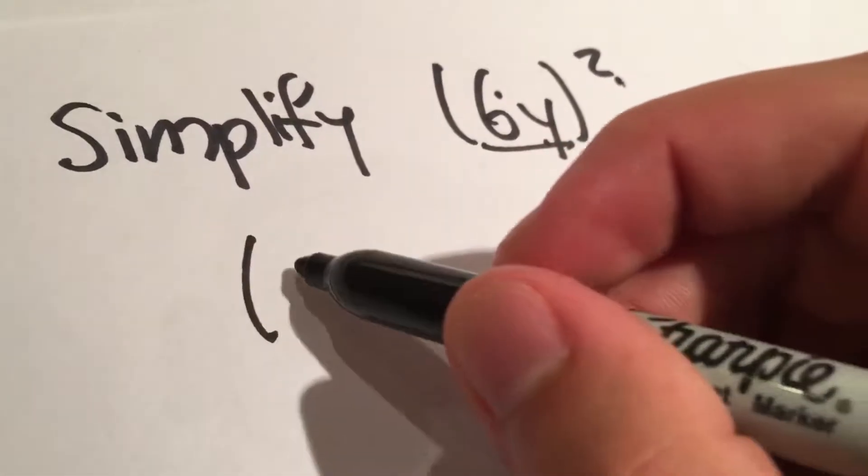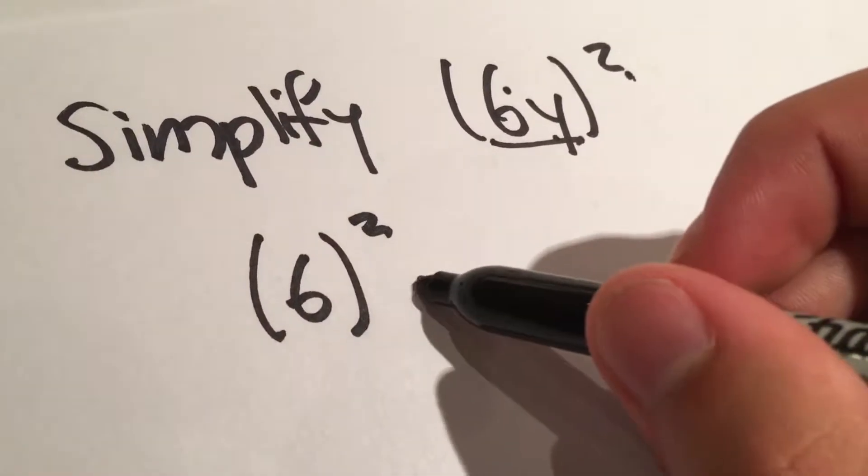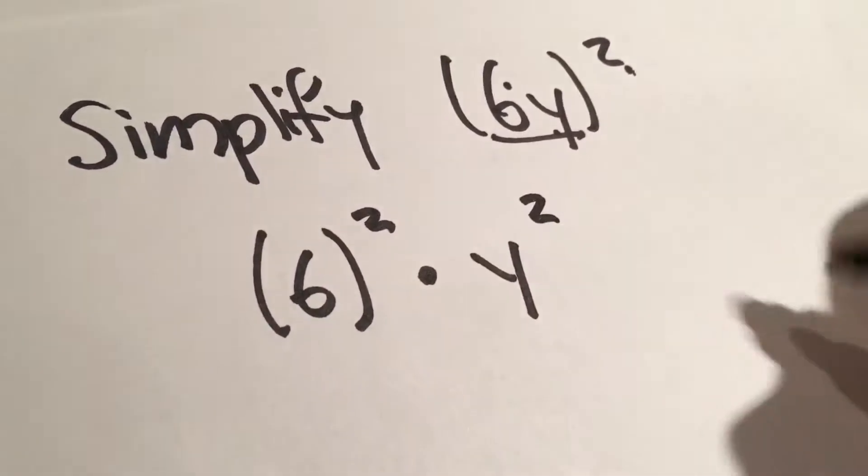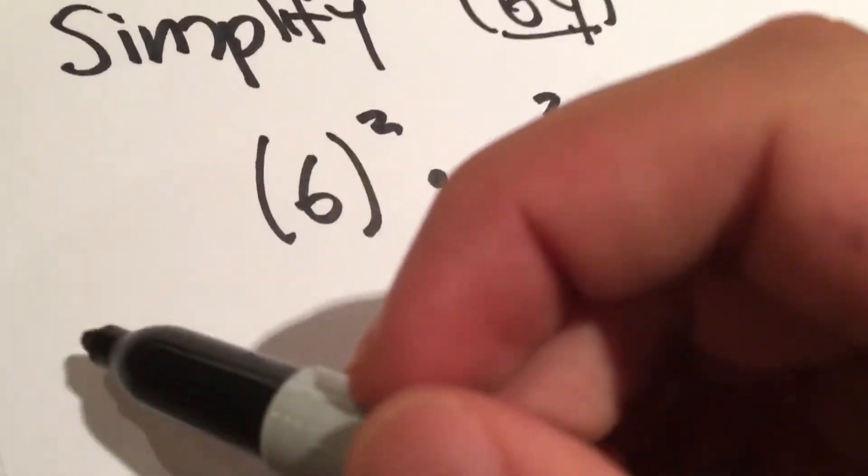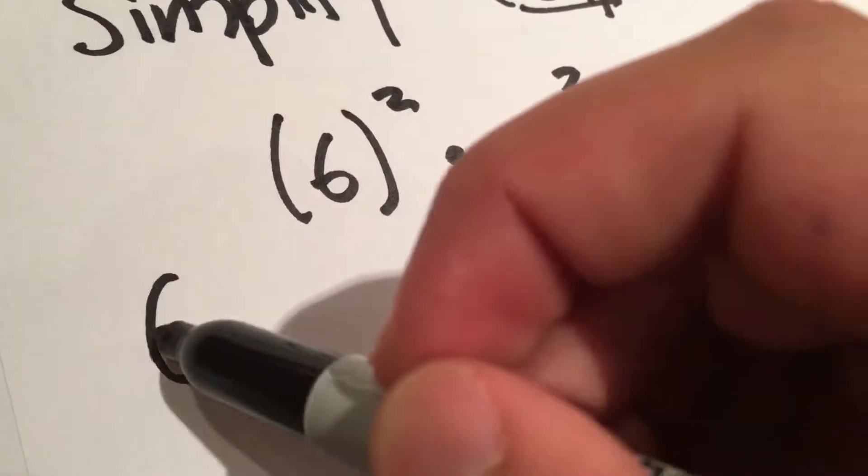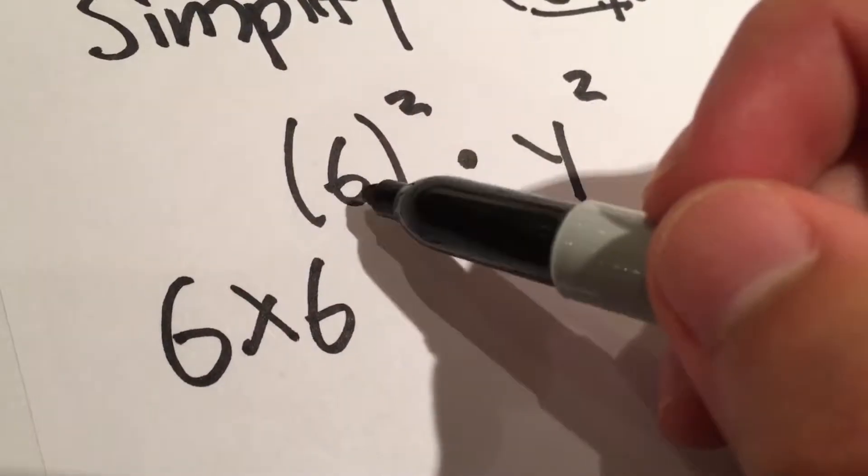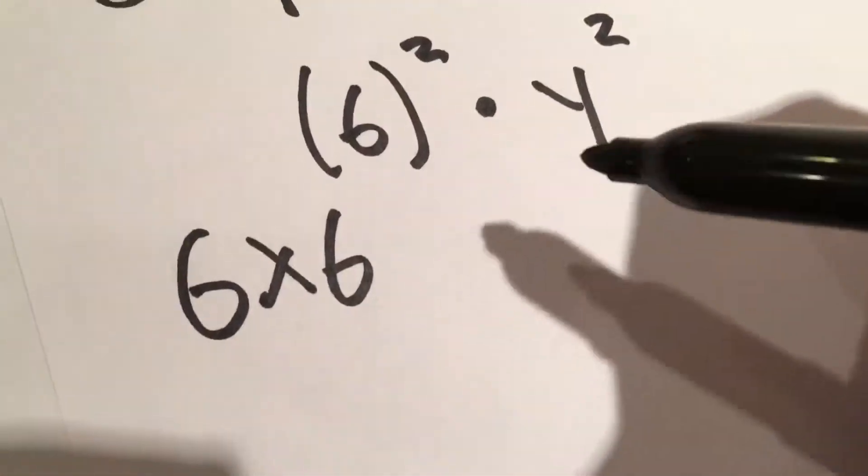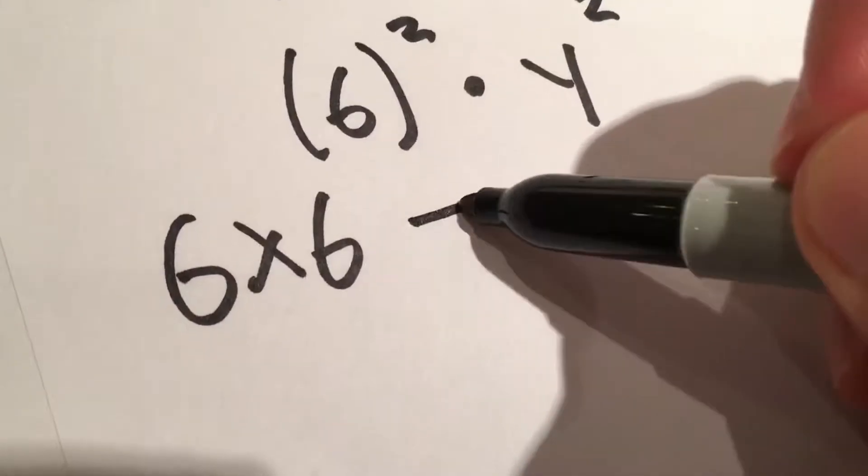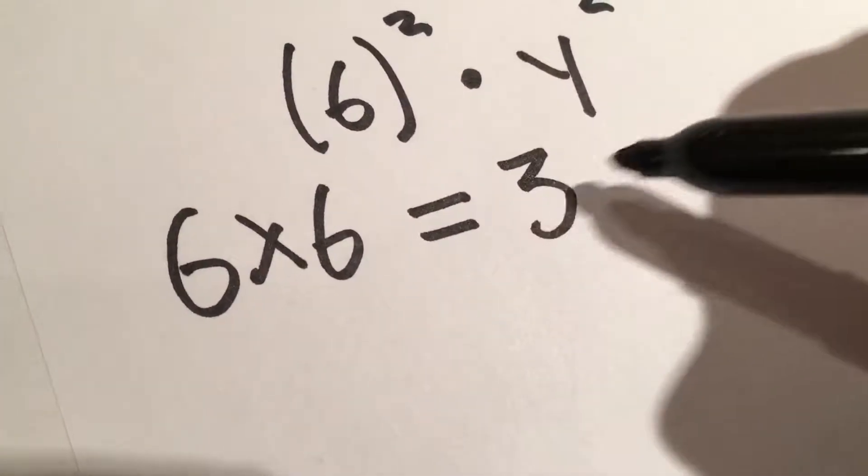So it's going to look like 6² times y². So 6² is just 6 times 6, that's what this square symbol does, to multiply something by itself. 6 times 6, that equals 36.